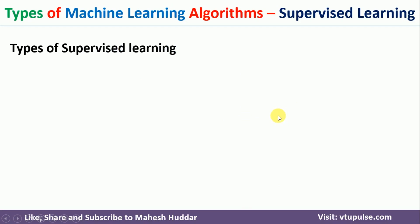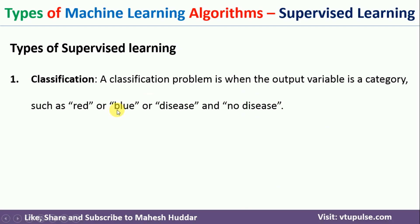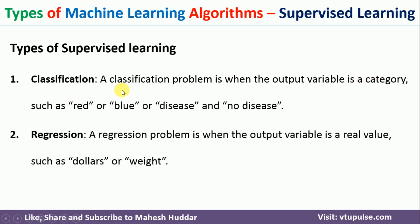Now, what are the different types of supervised machine learning algorithms? There are two types. The first is classification, where the target label is of categorical type — for example, red or blue, disease or no disease. It may be two classes or more than two classes, but if the output is categorical it is called classification. The second type is regression, where the output variable or target is a real value — for example, a dollar value or weight — which is a continuous value.